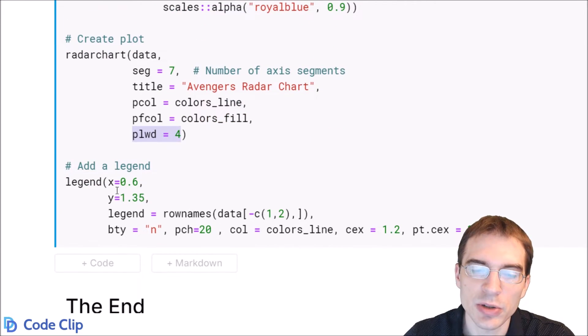And finally, we're just going to add some code to put a legend on the plot so that we know which color is associated with which character. That's what this is doing. So let's run this one and see what we get.